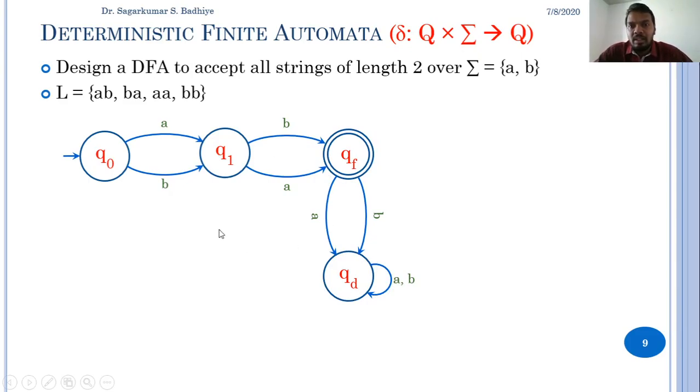This finite automata can be represented in tuple format as follows: M = (Q, Σ, δ, q0, F) where Q = {q0, q1, qf, qd}, Σ are the input symbols a and b, δ is given by the transition diagram or transition table, initial state q0 is q0, and final state F is qf.